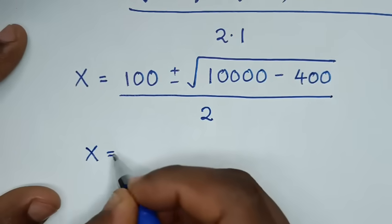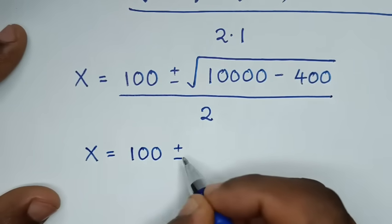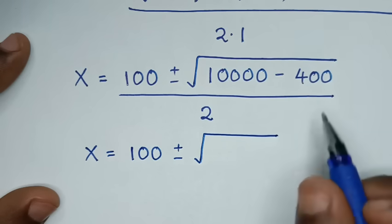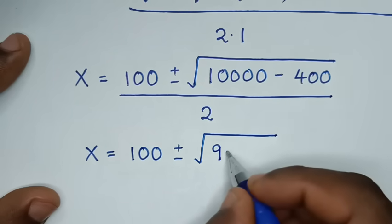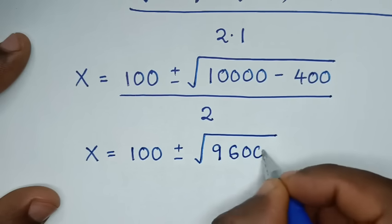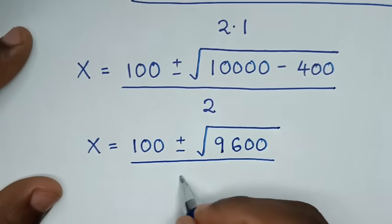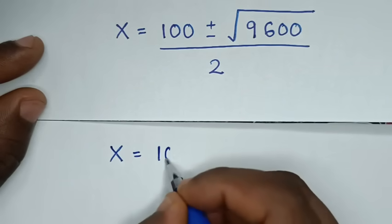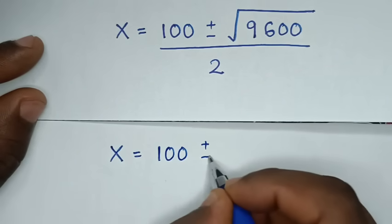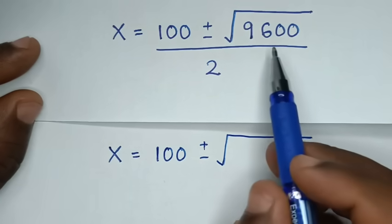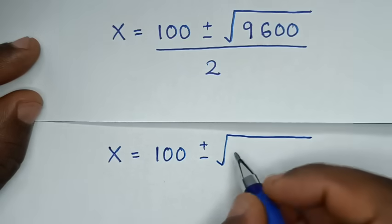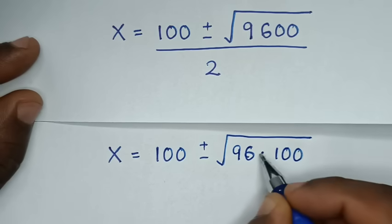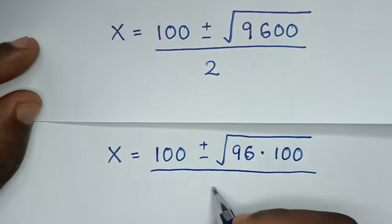This gives x is equal to 100 plus or minus square root of 10,000 minus 400, which is 9,600, over 2.